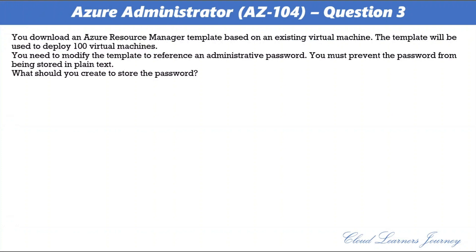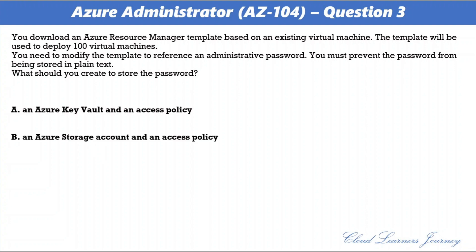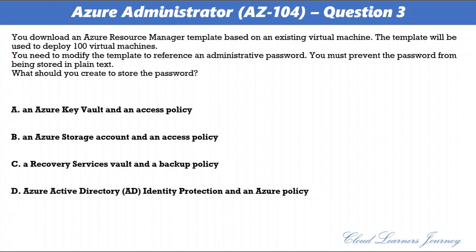Question 3. You download an Azure Resource Manager template based on an existing virtual machine. The template will be used to deploy 100 virtual machines. You need to modify the template to reference an administrative password and must prevent the password from being stored in plain text. What should you create to store the password? Options: A. An Azure Key Vault and an access policy. B. An Azure storage account and an access policy. C. A recovery service vault and a backup policy. D. Azure Active Directory identity protection and an Azure policy. The correct option is A. You can use a template that retrieves the password stored in a Key Vault, so the password is never put in plain text in the template parameter file.